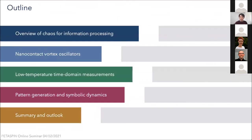Here is the brief outline of my talk. I'll give a very quick overview of what chaos might be used for in information processing. I'll describe briefly the nanocontact vortex oscillators that we've been studying, then talk about a series of low-temperature time domain measurements in which we've seen some of these chaotic effects, and some more recent work in which we looked into more details of the pattern generation and symbolic dynamics associated with the system. I'll terminate with a short summary and outlook.